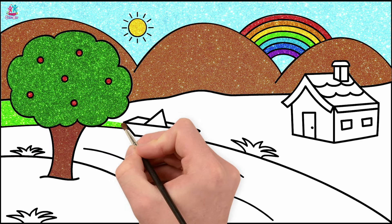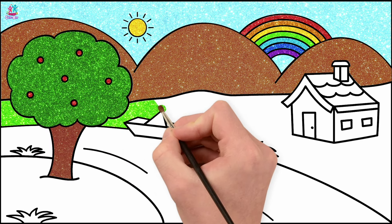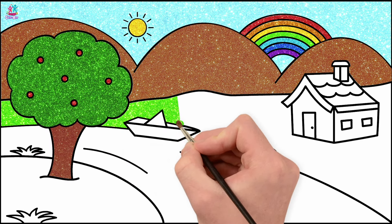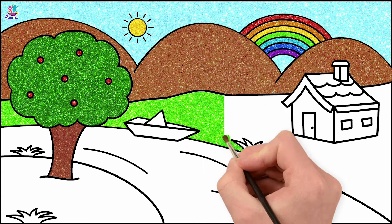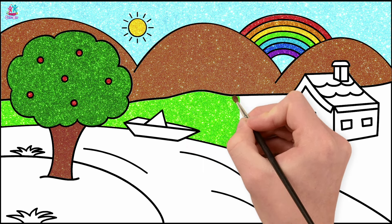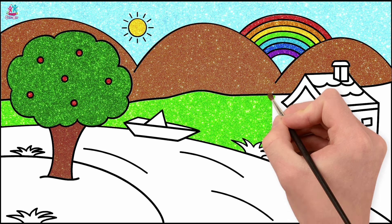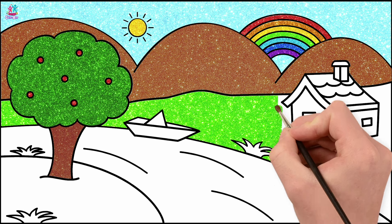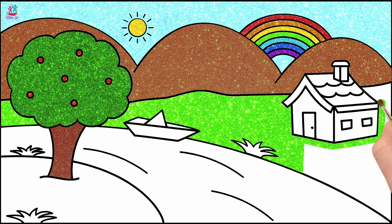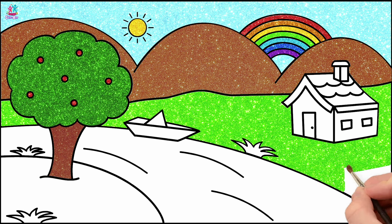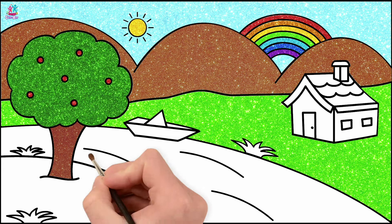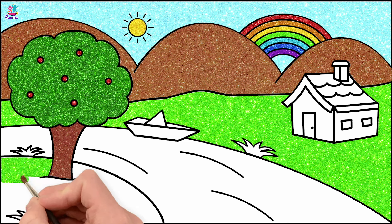Red fruit — what do you think it could be? Apples! Fantastic. A brown tree trunk. Let's go for a lighter green for the grass behind the river — that's a great contrast to the brown mountains. We've got lots of brown and green going around the house. Lovely!